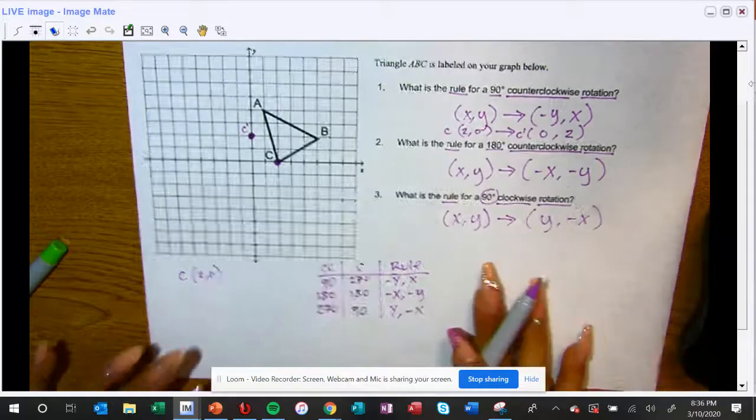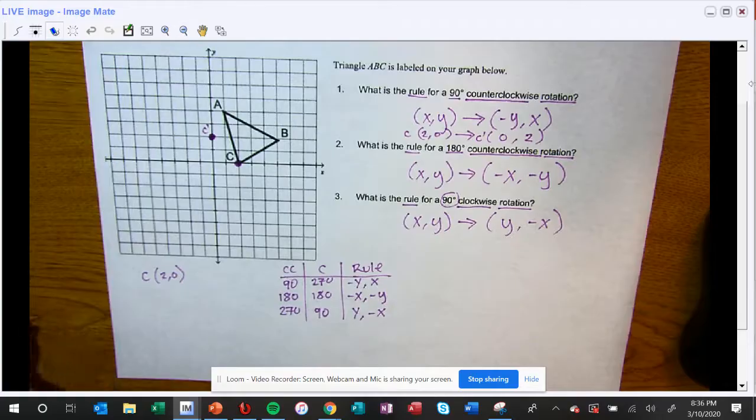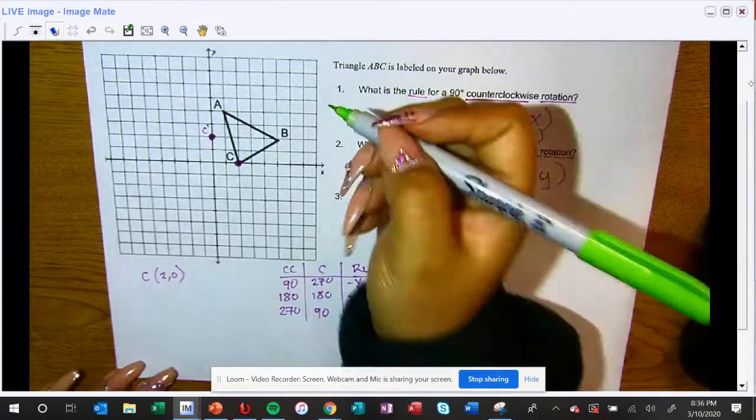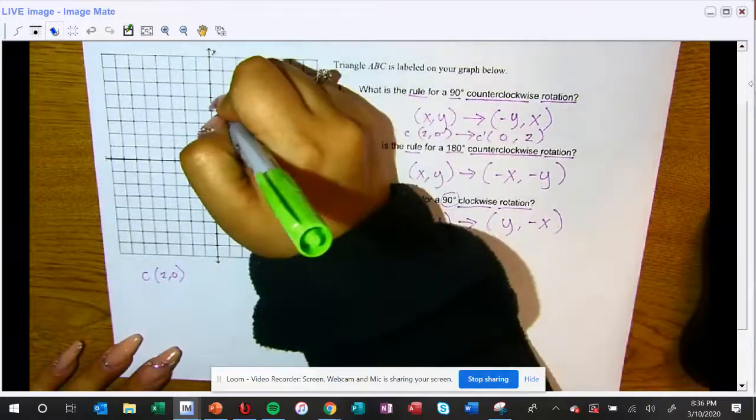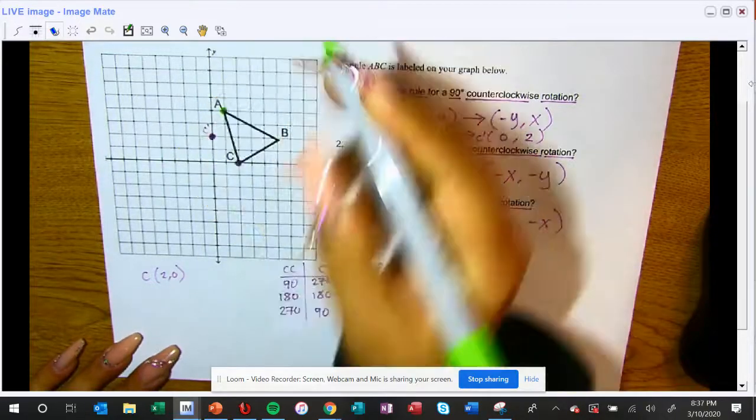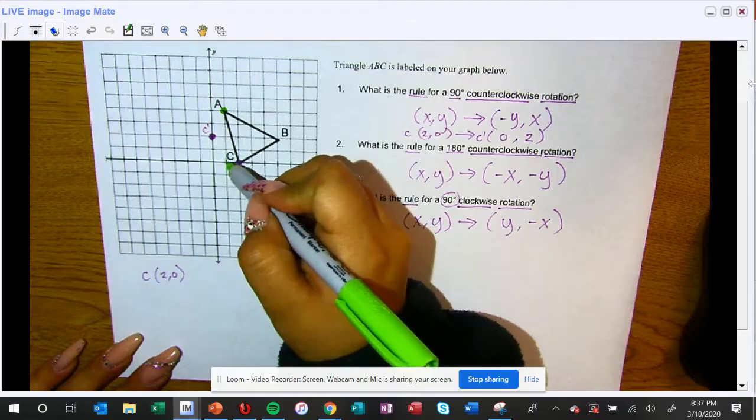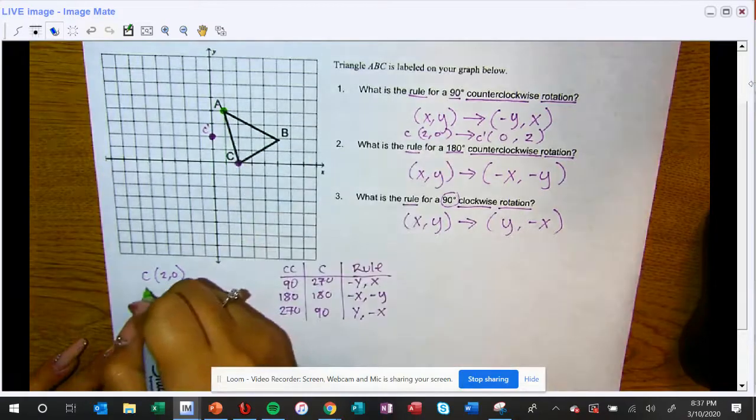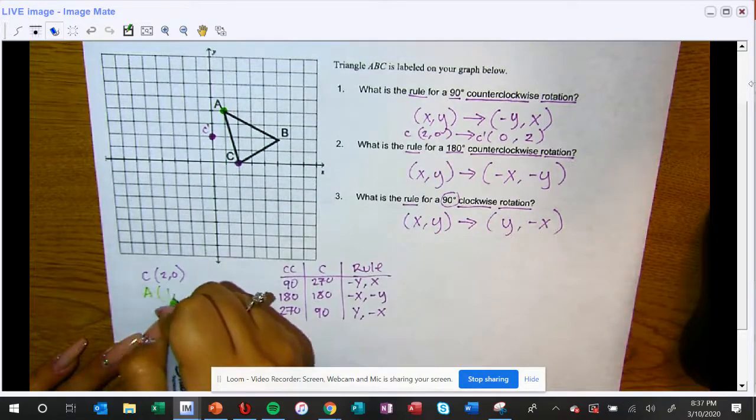So that new point C prime would be at zero comma two, which would be here. Now I'm going to try that with a different point because it doesn't work so well when you're doing it with that one. So I'm going to try this point here. That point is at positive one comma four.